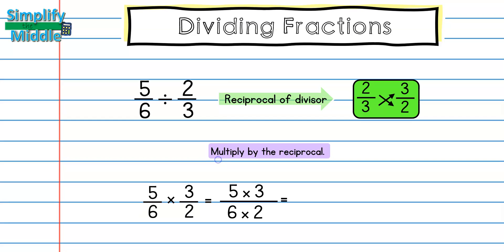This is how we will always divide fractions. For my numerator I have 5 times 3, and for my denominator I have 6 times 2. In a previous lesson on multiplying fractions we learned about cross-canceling — if I look across the diagonal and see any factors in common, I can divide them out. This allows me to have a simplified answer at the end.